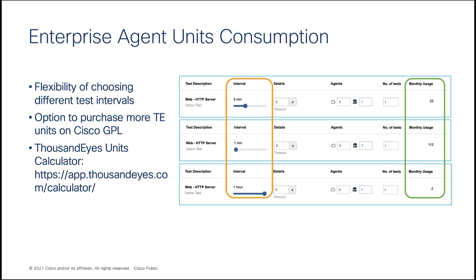Now that we understand how to get ThousandEyes units, let's talk about unit consumption. We discussed providing one test at 5-minute frequency for any Advantage or Premier license. One browser-based test at 5-minute frequency costs 22,000 ThousandEyes units — the amount provided per Advantage or Premier license. However, we offer flexibility in choosing different test intervals and test types, such as 1-minute or 1-hour frequency. Based on the frequency and type of test you use, ThousandEyes consumption will differ and will be deducted from your account. We have a calculator to help you determine how much each test type consumes. If you need more units, there is also an option to purchase additional ThousandEyes units on Cisco GPO.